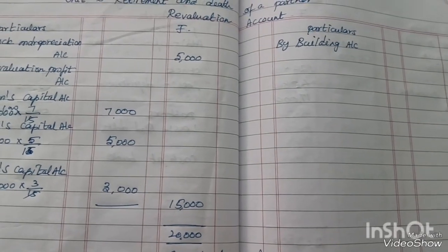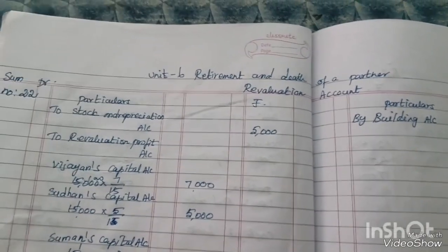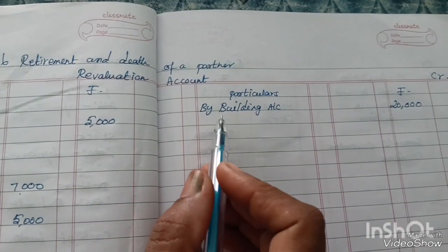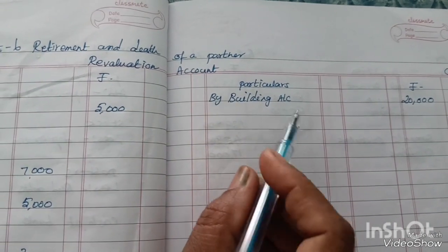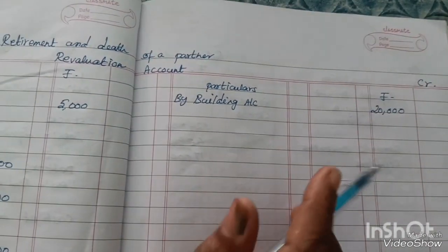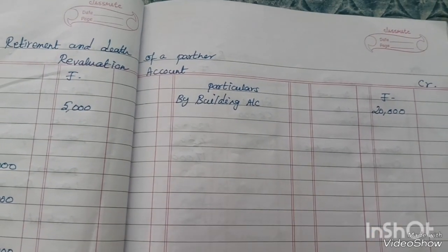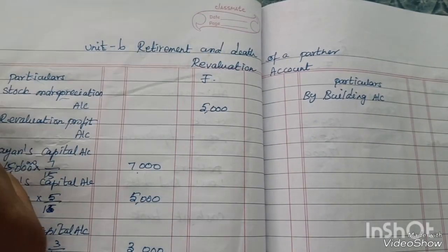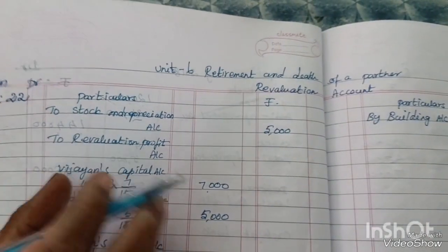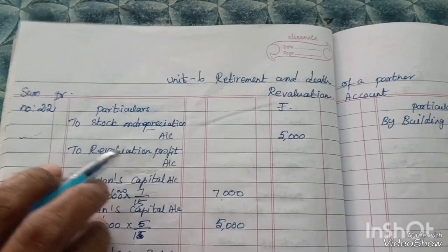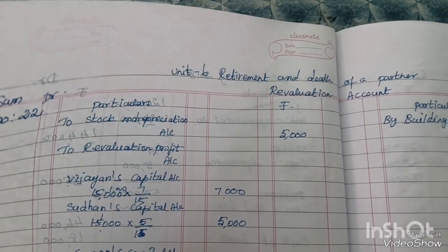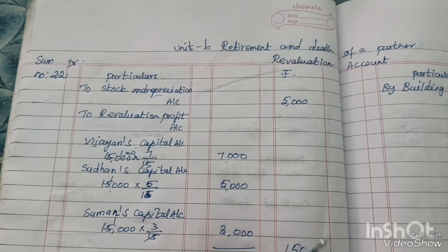Revaluation account is opened. Building account increases the value by 20,000. On the debit side, stock depreciation account is 5,000. So 20,000 minus 5,000 equals 15,000. The revaluation profit is 15,000.